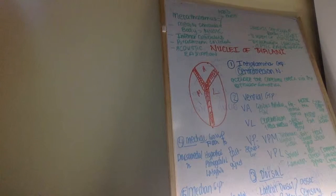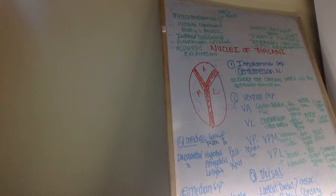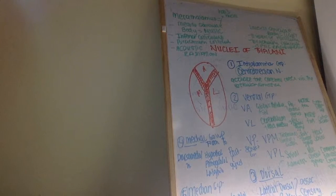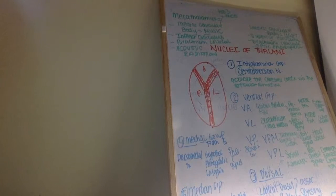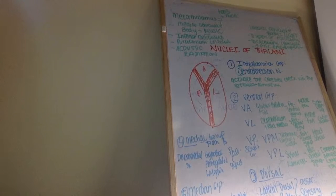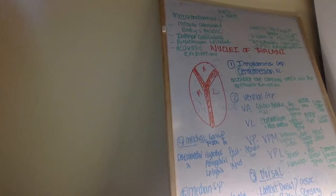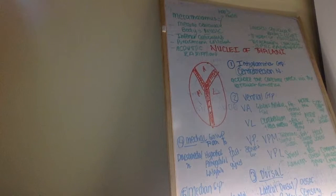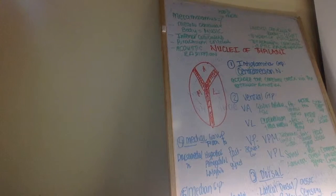Moving on to our biggest group: the ventral group. The ventral group can be divided into ventral anterior (VA), ventral lateral (VL), and ventral posterior, which is further divided into VPM (ventral posterior medial) and VPL (ventral posterior lateral). VA and VL are both for motor function, which means you already know they're going to project to the precentral gyrus — our motor cortex.